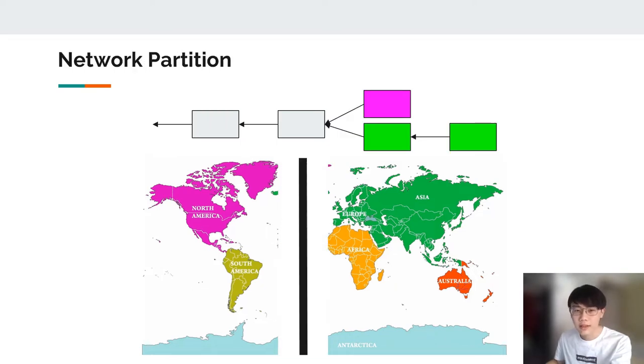Imagine a solar storm breaks the submarine cable between America and other continents. The network will be partitioned into two regions, and America cannot communicate with others. As a result, a fork will happen in blockchain, where America has its own branch, and other continents will work on the other branch.